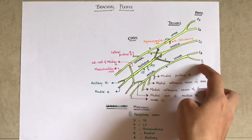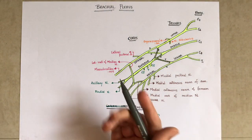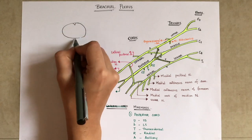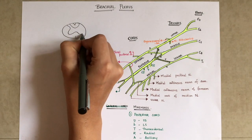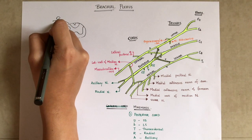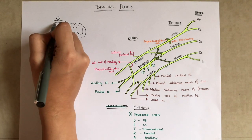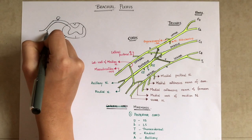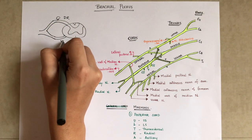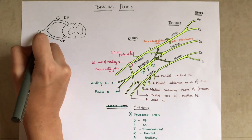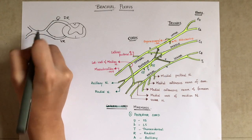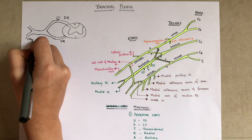How was the brachial plexus formed? It is formed from the ventral primary rami of a few spinal nerves. First we'll talk about what is ventral primary rami. If this is a cross-section of spinal cord, this is the dorsal root, this is the dorsal root ganglia, and this is the ventral root. A spinal nerve is formed by the fusion or joining of the dorsal root and the ventral root.